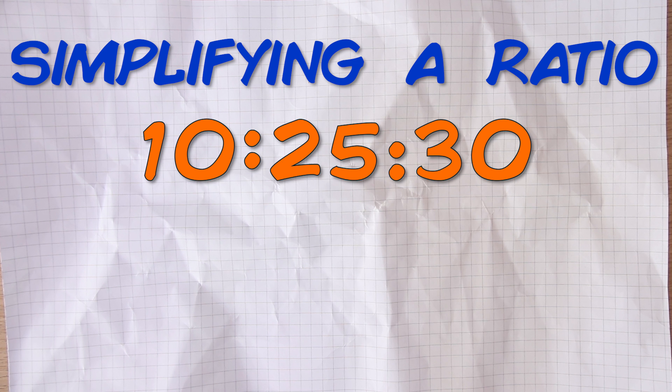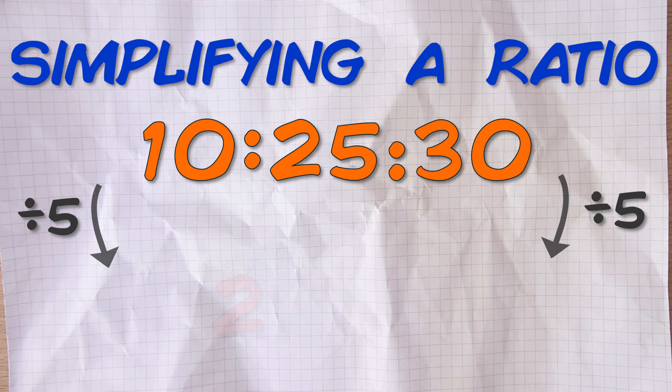In this example there are three numbers. Don't worry about that, we still just do the same thing - we look for a number that all of them can be divided by. You can see that all three numbers are in the five times table so they can be divided by 5. Ten divided by 5 is 2, 25 divided by 5 is 5, and 30 divided by 5 is 6. So we end up with a ratio of 2 to 5 to 6.